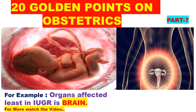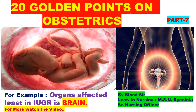What is the type of golden points? Let's look at an example: the organ affected least in IUGR — intrauterine growth retardation — is the brain. This type of golden points will be found in this video. If you want to subscribe to the channel, please like and share it with your friends. Let's see what the golden points are.